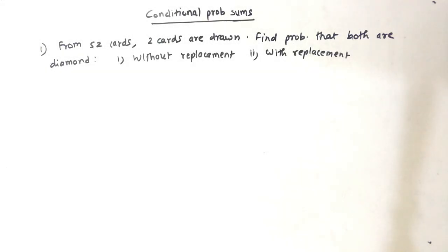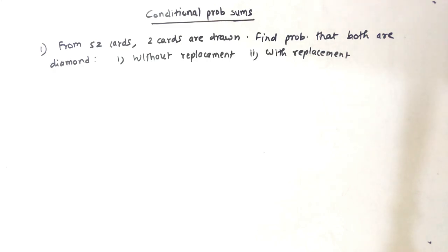Hello friends! In this video we will see some conditional probability sums — we will cover a maximum variety of sums. Our first question is: from 52 cards, two cards are drawn. Find the probability that both are diamond. The first type is without replacement and the second is with replacement.